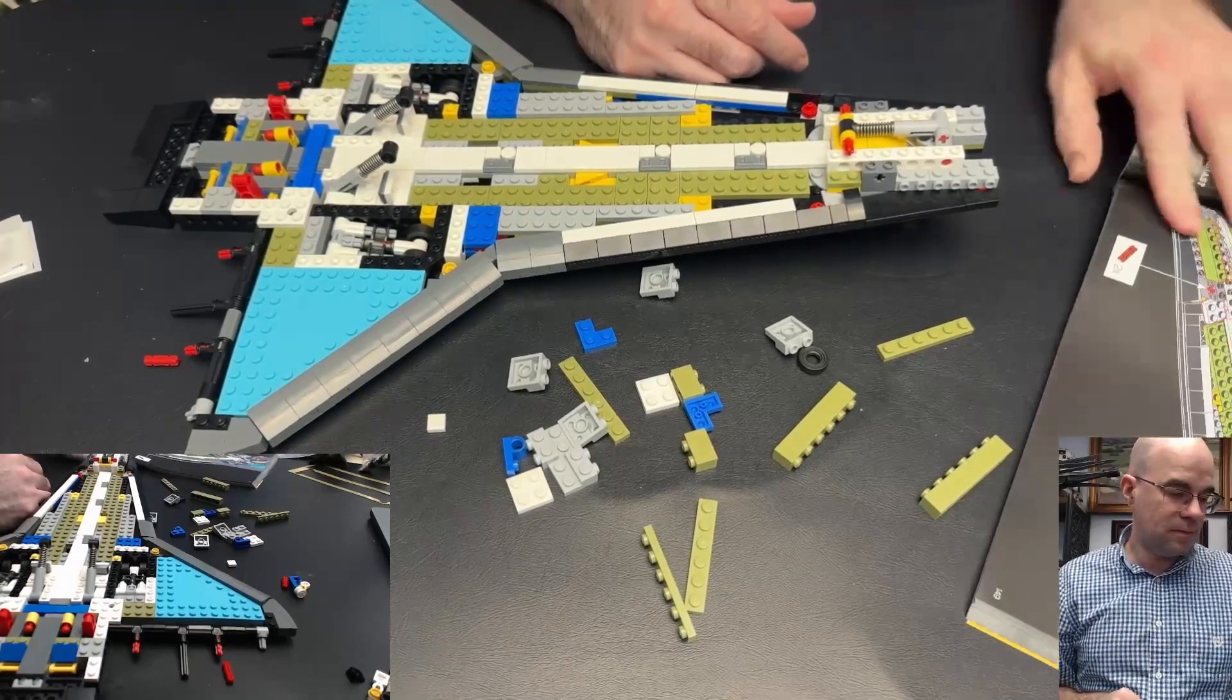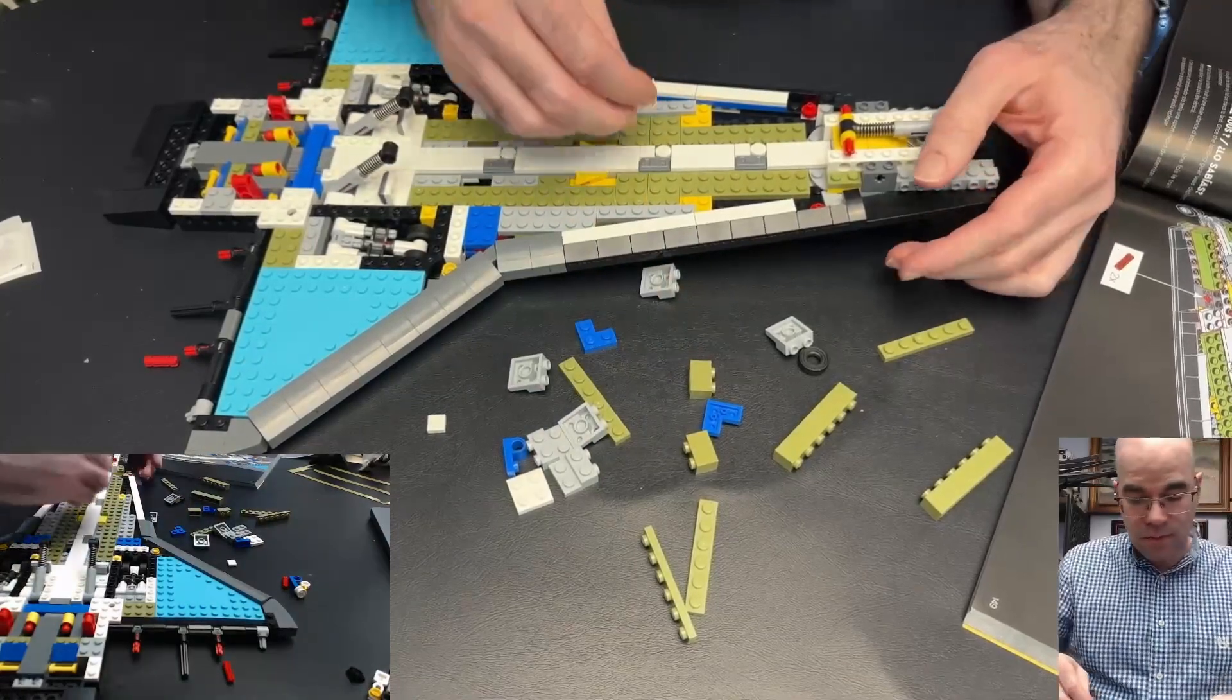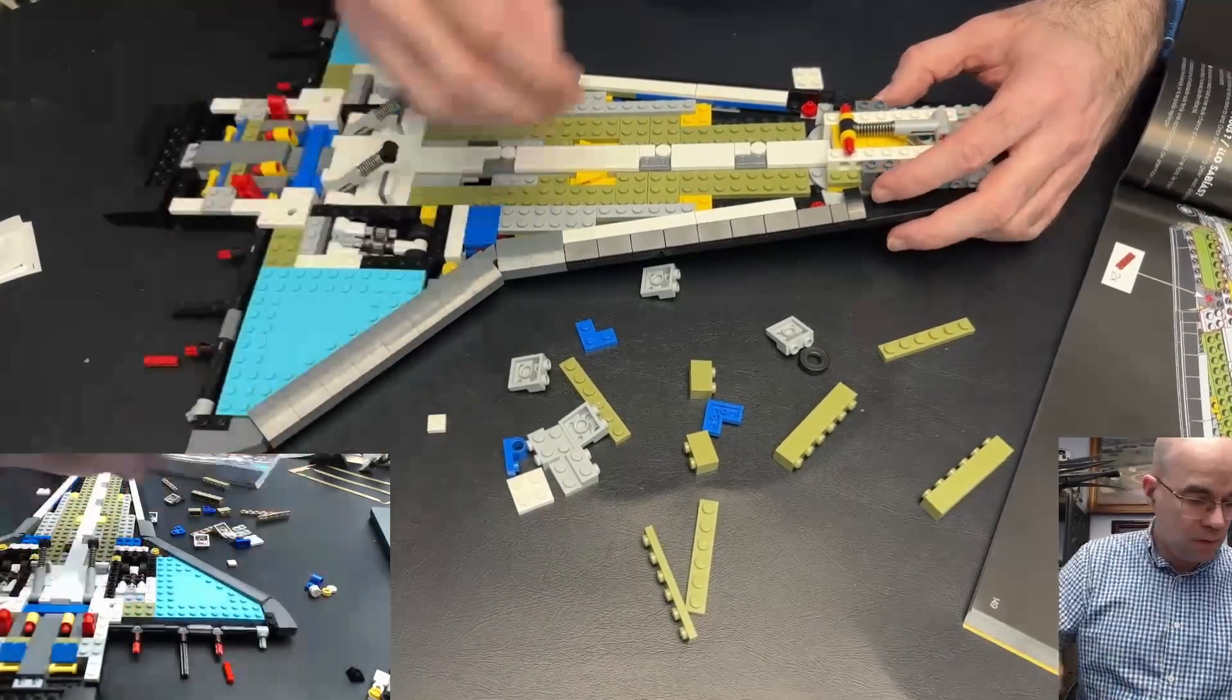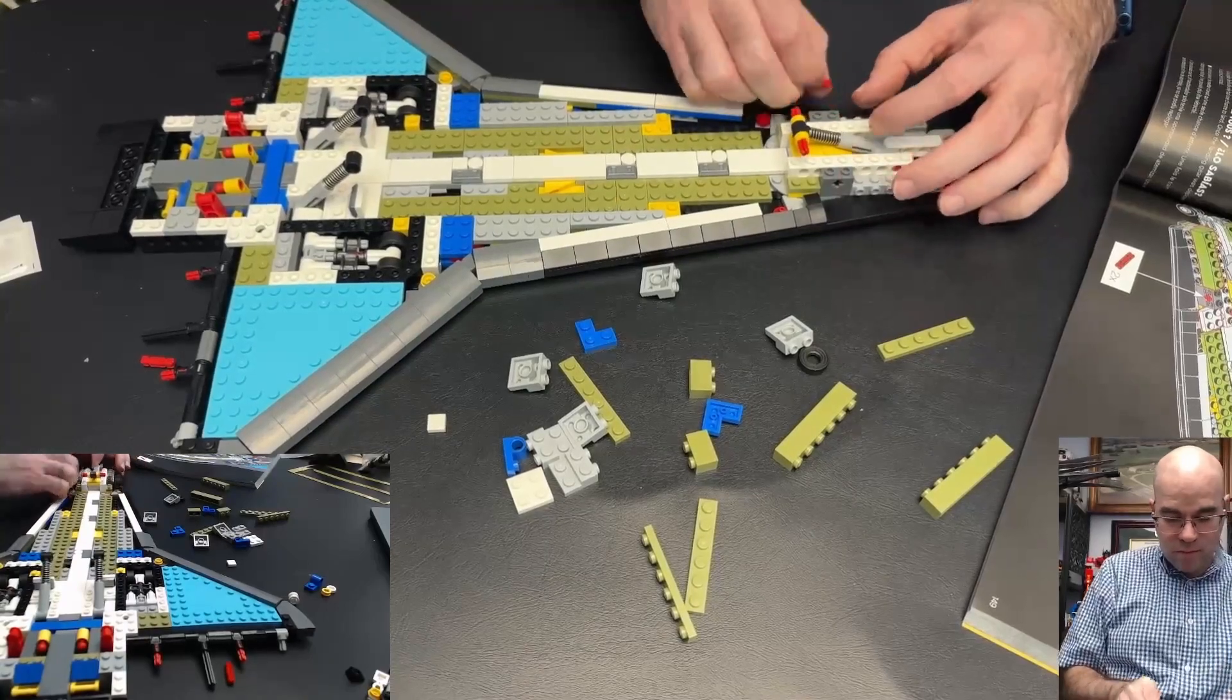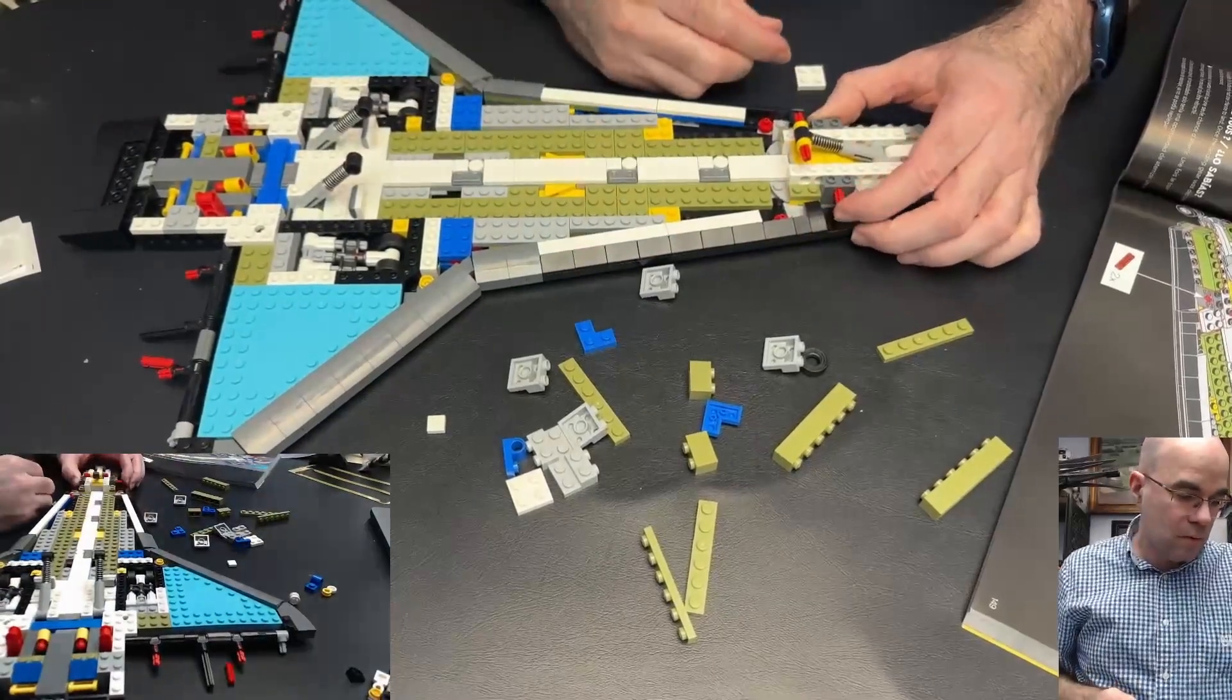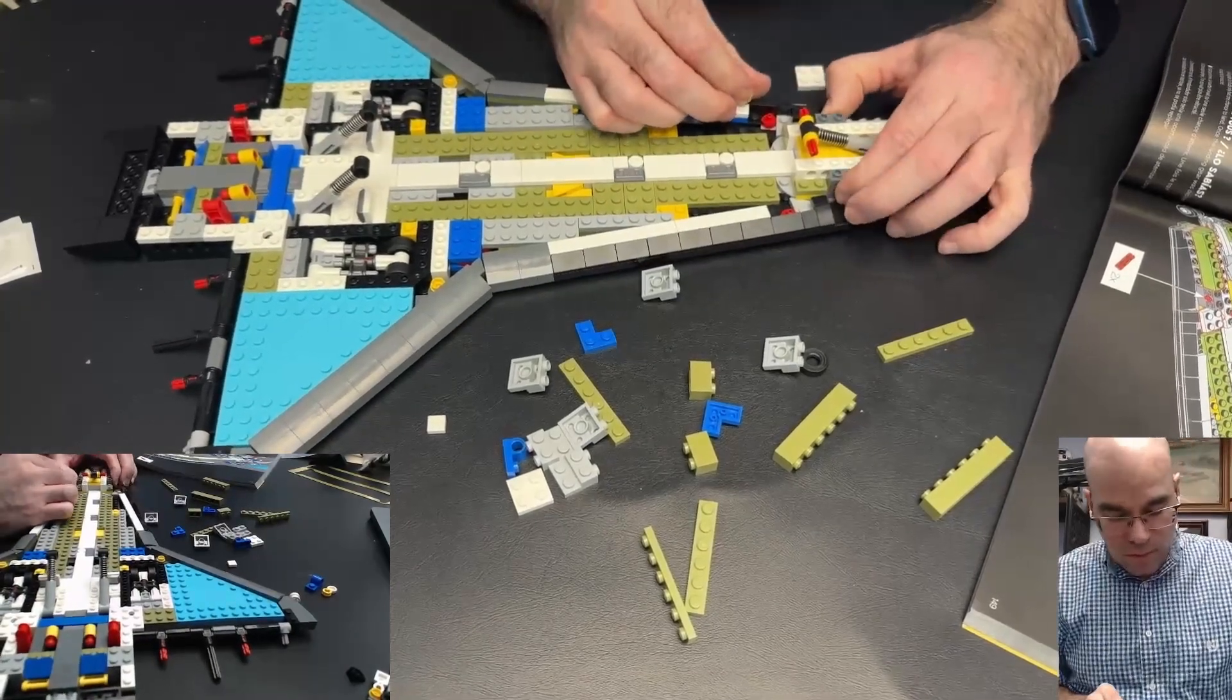Okay, and now we have some plates to put on here. We got a couple red axles. We put these red axles in here, this piece here on the other side. There we go.